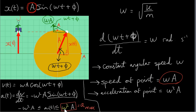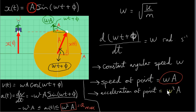So that tells us that the maximum magnitude of the acceleration of the mass is omega squared a. I say magnitude because this is a positive quantity — omega squared is positive and a, the amplitude, is usually given as a positive quantity. From the theory of uniform circular motion, we know that the acceleration of the point on the circle is omega squared times the radius of the circle. But the radius of the circle is a, so the acceleration of the point is omega squared a.